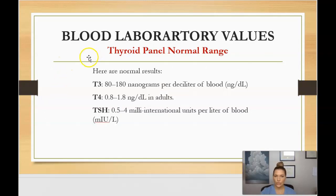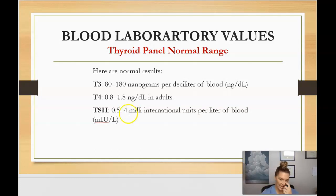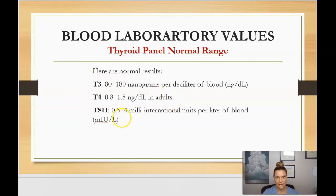Here are the norms for the thyroid panel: T3 should be between 80 and 180, T4 should be between 0.8 and 1.8, and TSH should be between 0.5 and 4. If your patient is hypothyroid — meaning their thyroid is not producing enough — you'll see these numbers lower. If they have hyperthyroidism — meaning their thyroid is producing too much — these values will be above the normal range.